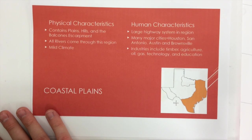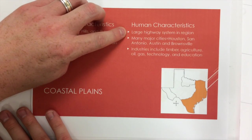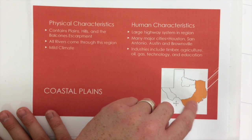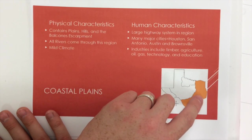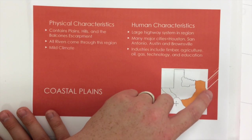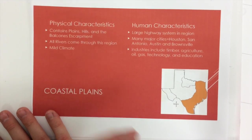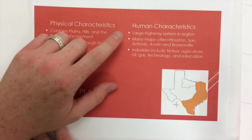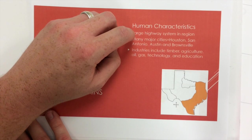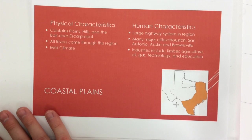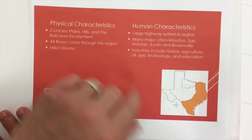It is going to be very humid in this area. For human characteristics, there are going to be large highway systems in this region — we're going to have I-35 and I-45, and interstates going across the state east and west as well. There are four major cities: Houston, San Antonio, Austin, and Brownsville. We labeled them on our map earlier.